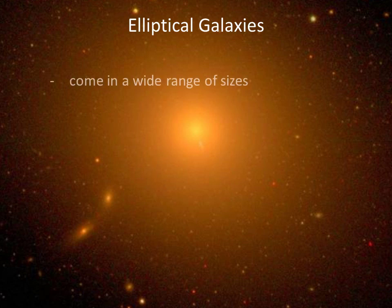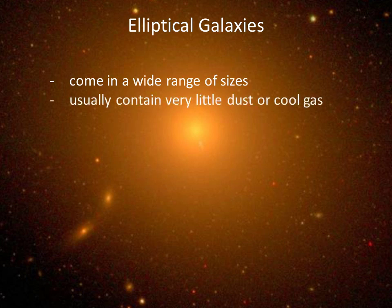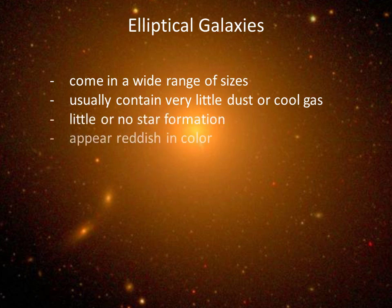Elliptical galaxies come in a wide range of sizes, from the rare giant ellipticals to the dwarf ellipticals, which often have fewer than a billion stars. Elliptical galaxies contain very little dust or cool gas, therefore there is little or no star formation within ellipticals. Ellipticals often look reddish in color because all the massive blue stars have died away.